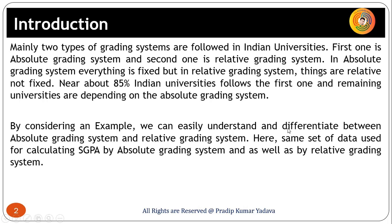In the absolute grading system, everything is fixed. But in the relative grading system, things are not fixed — they are relative and variable. If a student falls within a marking range, their grade is predetermined.